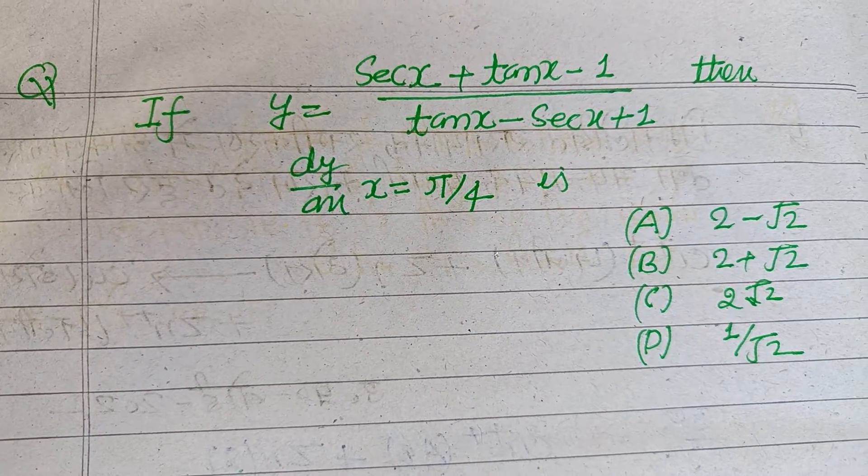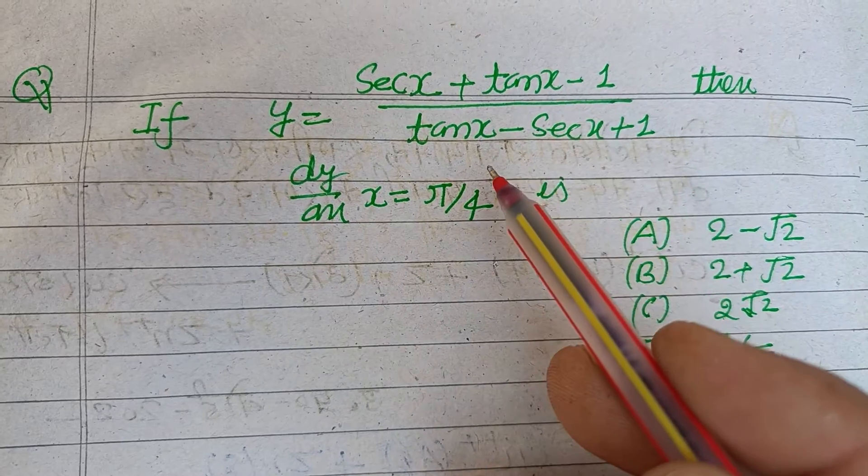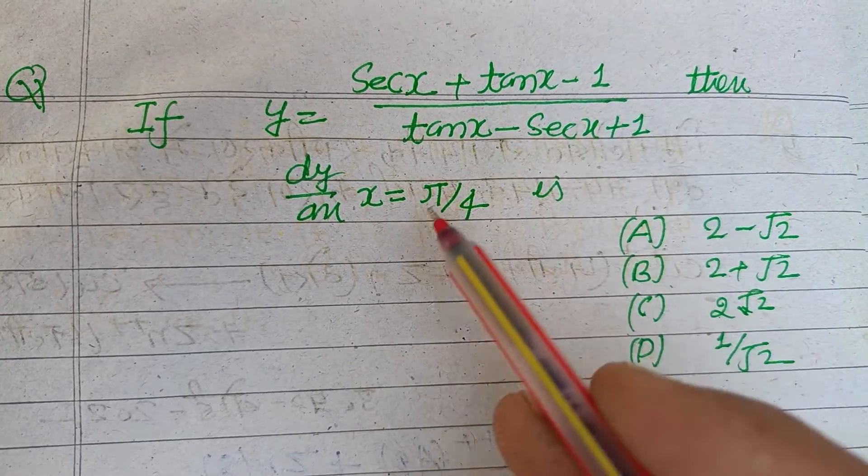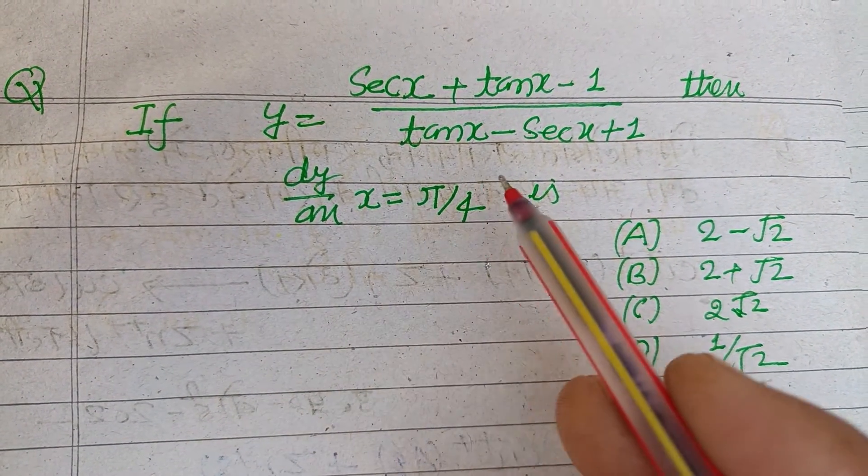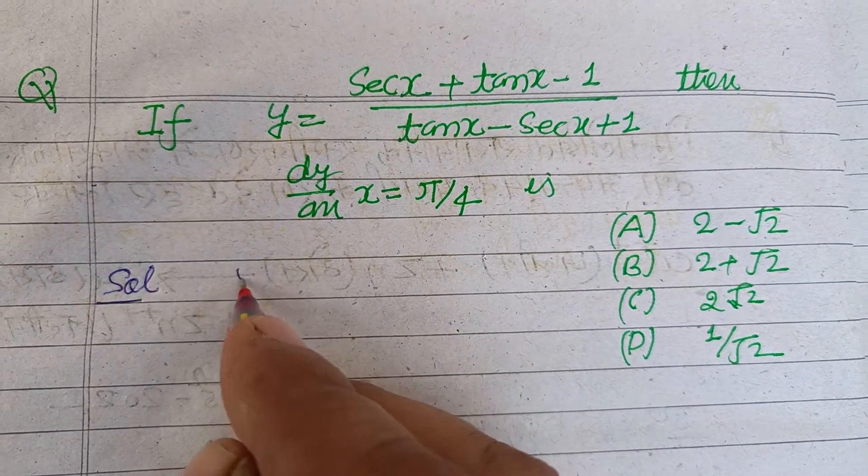Hello viewers, warm welcome to this YouTube channel. If y equals (sec x + tan x - 1)/(tan x - sec x + 1), then find dy/dx at x = π/4.